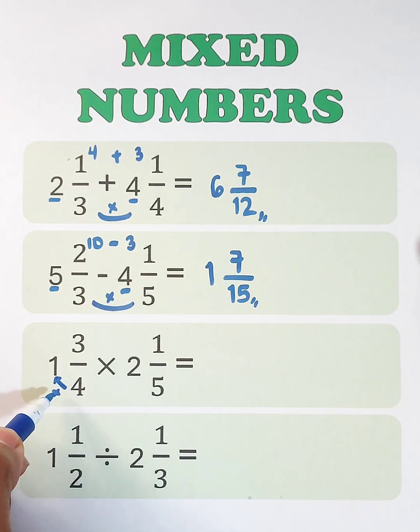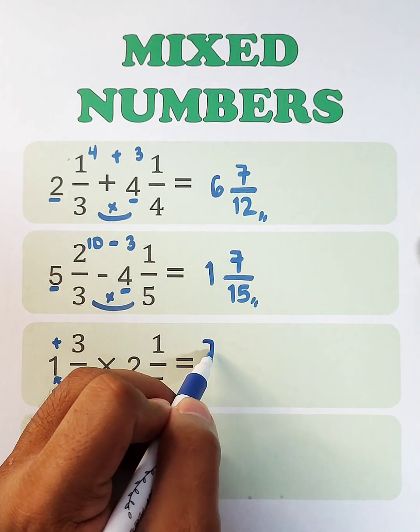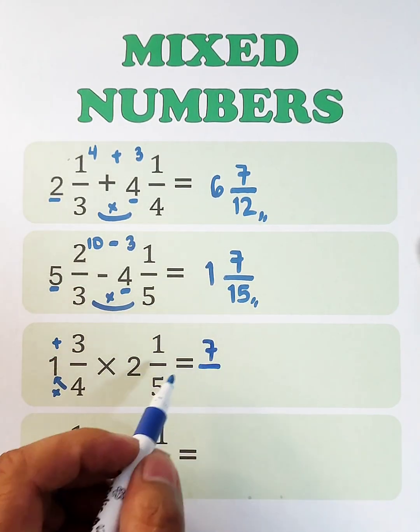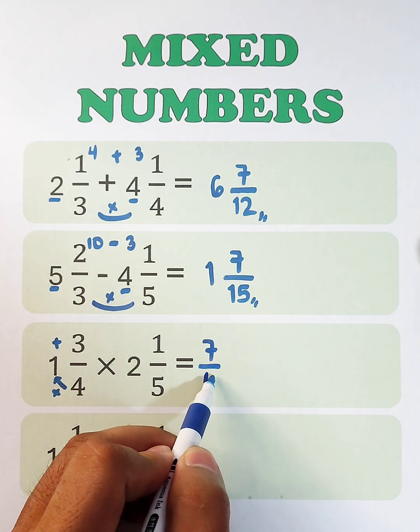4 times 1, which is 4, plus 3, that is 7. Then copy the original denominator, which is 4.